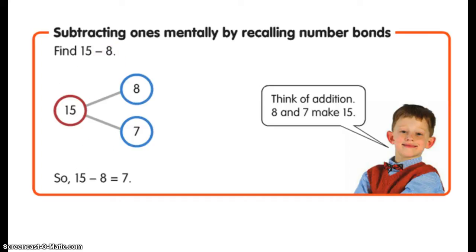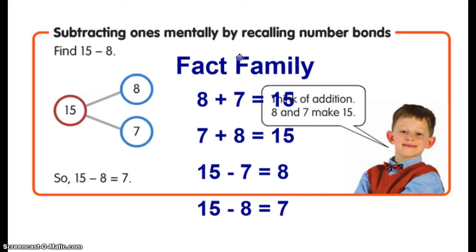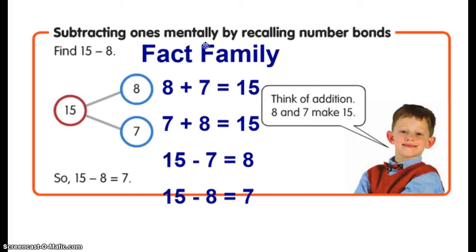I know that 8 and 7 make 15, and really fact family is the key here that your child studied in first grade and in kindergarten as well, at the beginning of second grade. In any number bond like this, 15, 8, and 7, there are four equations or facts that are related to just this one number bond.